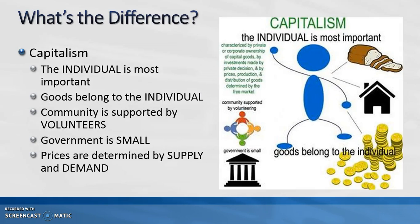You have an organizer to help you see the difference between the three economic systems. In capitalism, the individual is the most important part of society. Goods belong to the individual, the community is supported by volunteers, the government is small and doesn't interfere in business, and prices are determined by supply and demand — the more something is demanded, the higher the price; a large supply tends to lower prices.